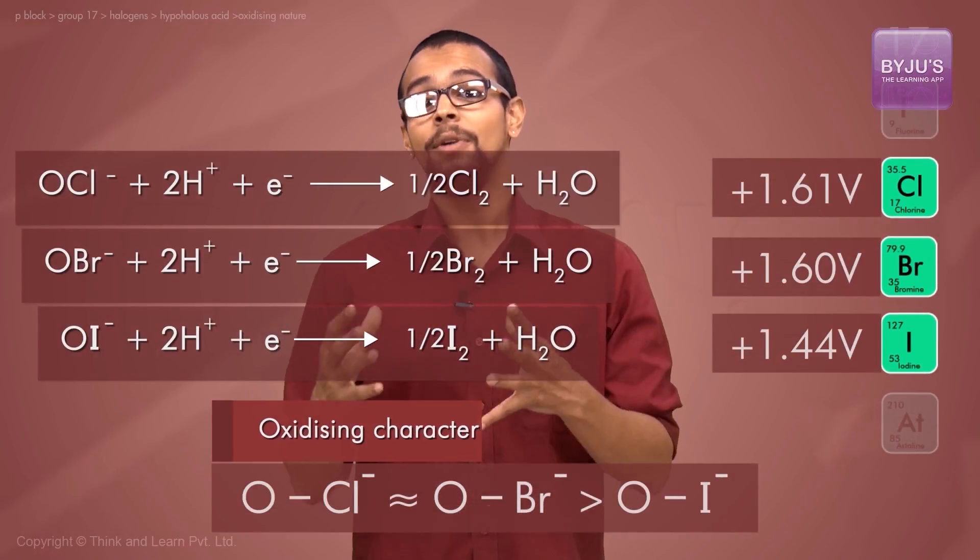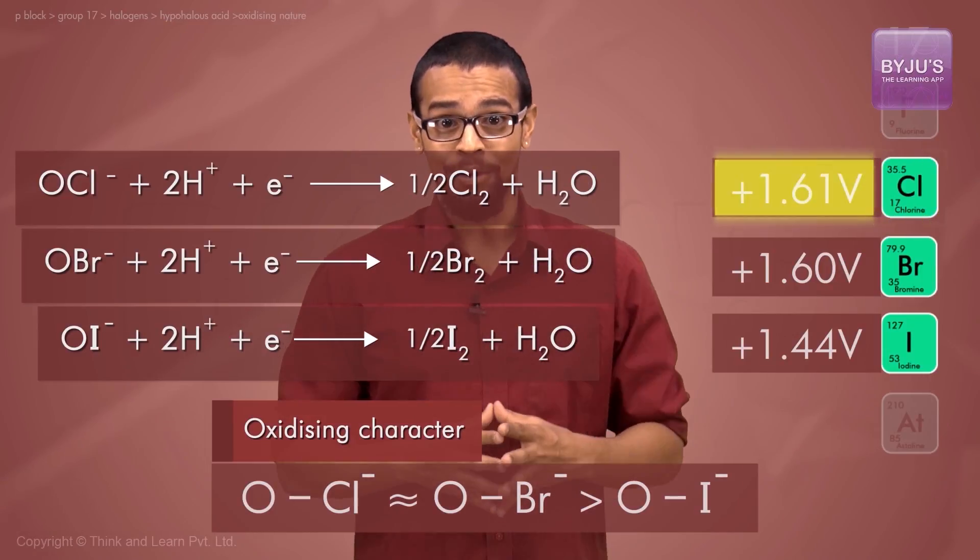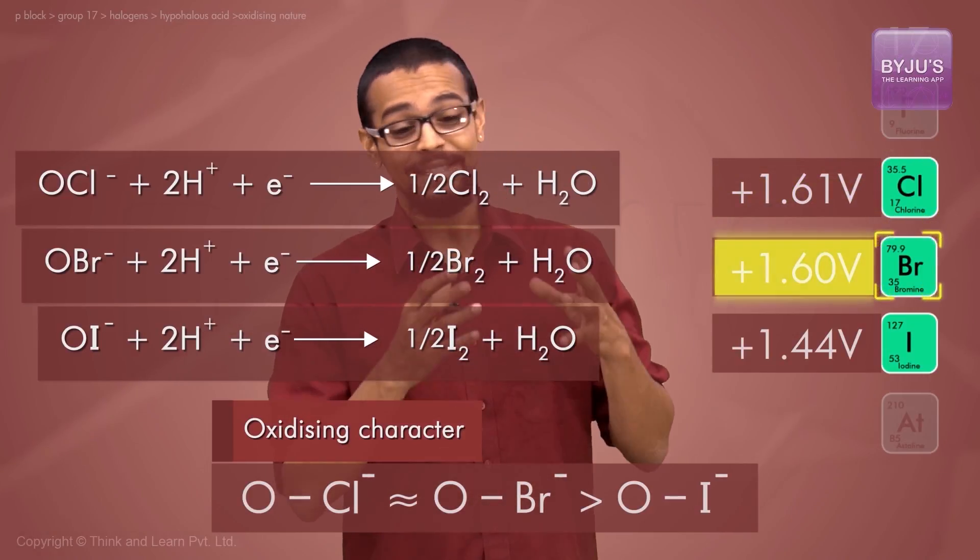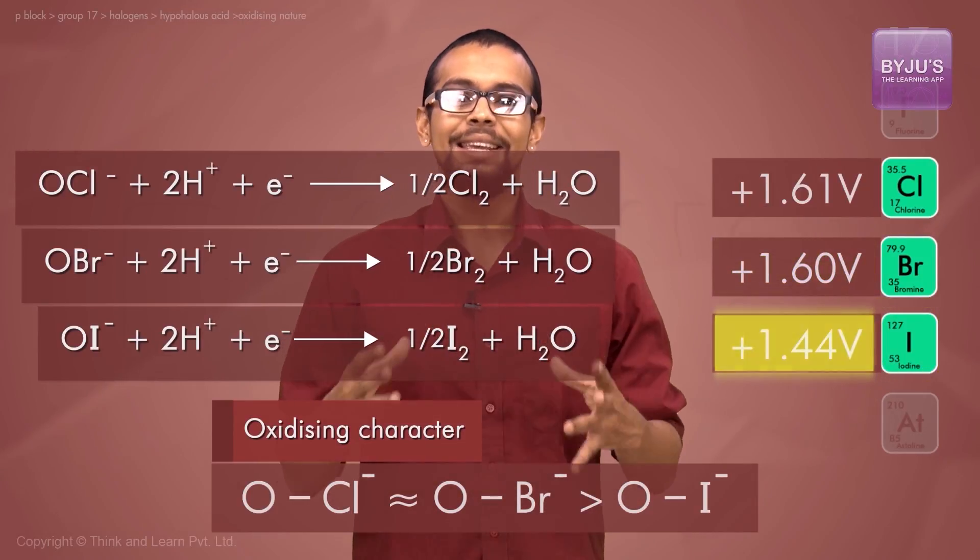Interestingly, and we find it hard to explain this as a trend, but from the electrode potential values we find that the hypochlorite ion is equally as oxidizing as the hypobromite ion, and the hypoiodide ion is the least oxidizing of them.